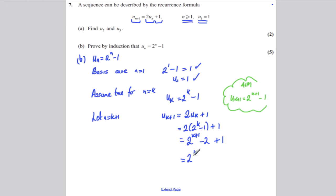So we have ourselves 2^(k+1) subtract one. Oh, look, that was our aim. And we have fulfilled our inductive hypothesis.